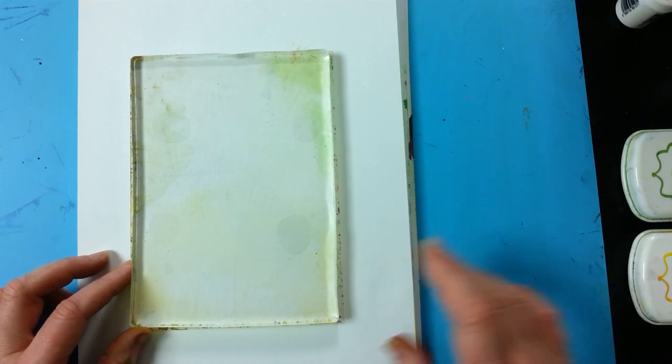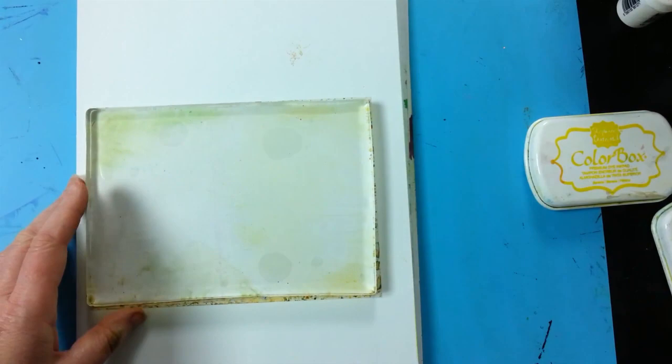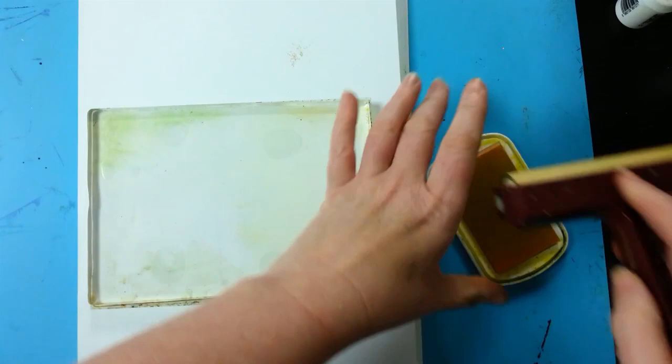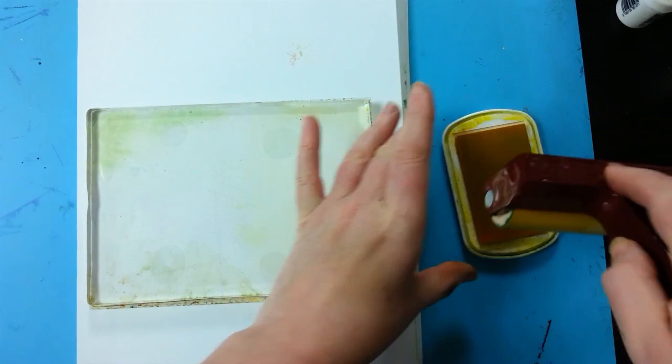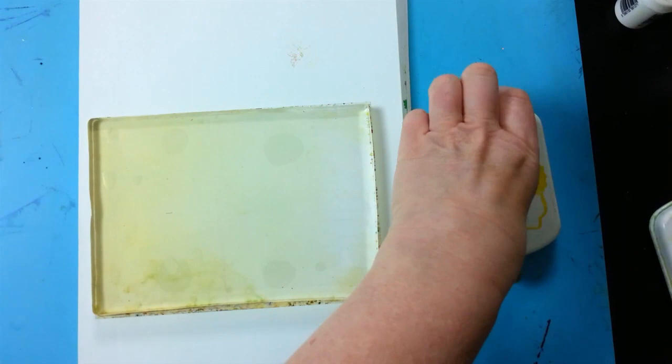So to start with I'm going to be using the banana and green apple Colorbox. Using the brayer and then inking it. The beauty about the Colorbox is that they don't bead on the jelly plate as with some of the inks on the market. This is why I tend to use them, they give you a really nice smooth finish.